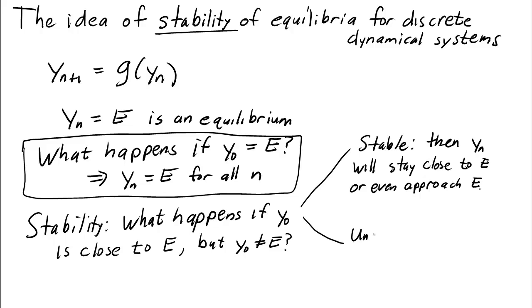If the equilibrium is unstable, then the solution will move away from the equilibrium.